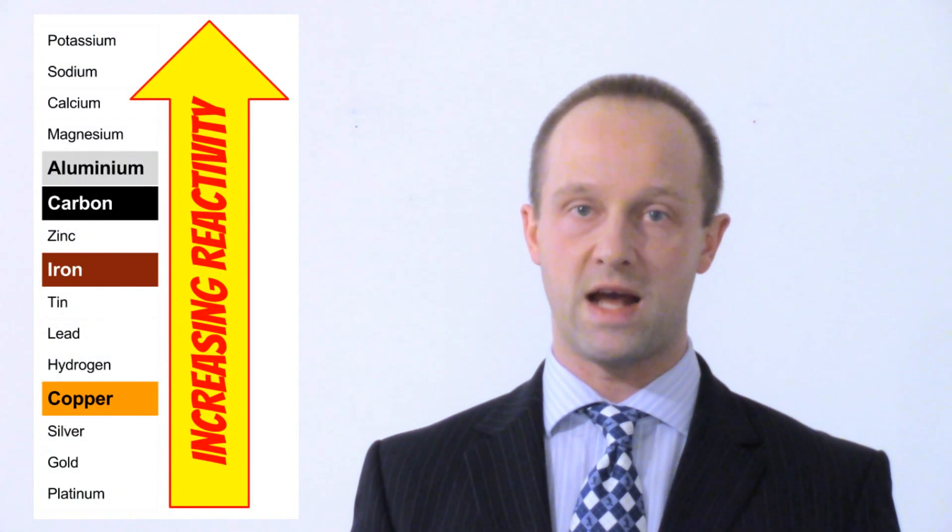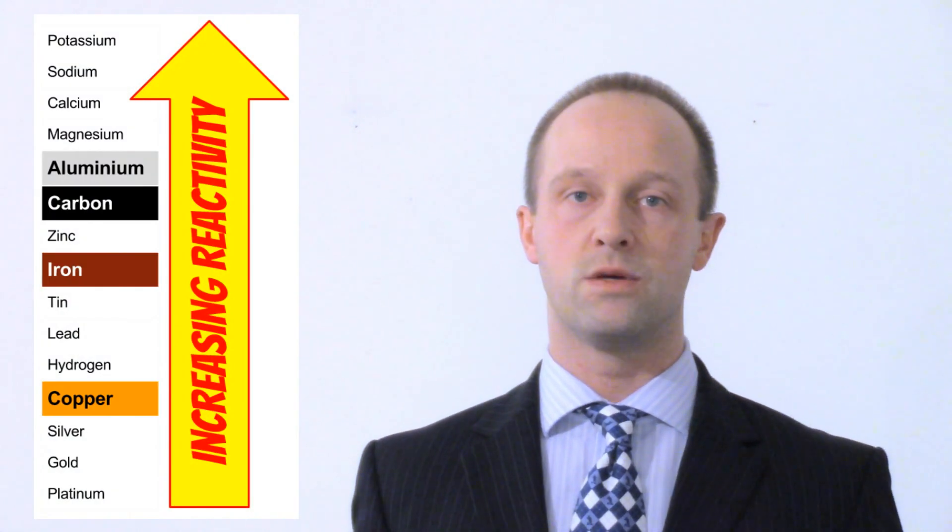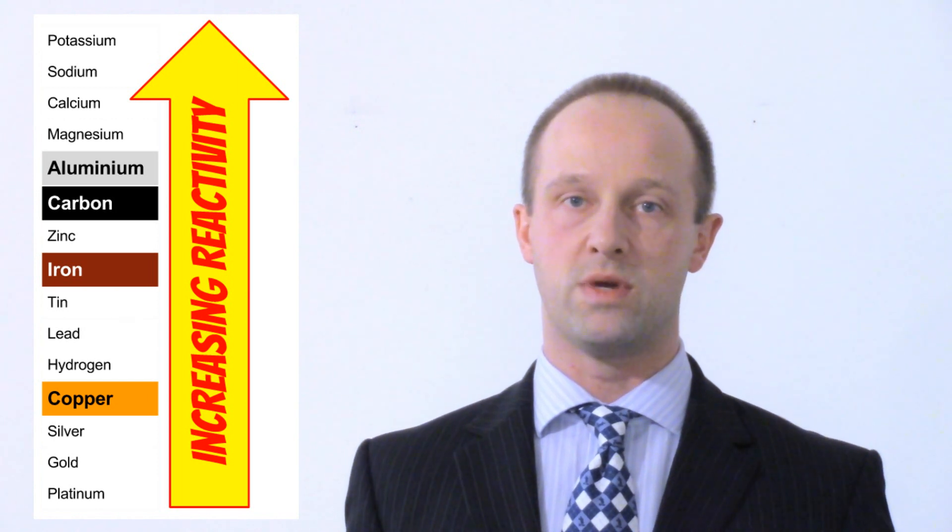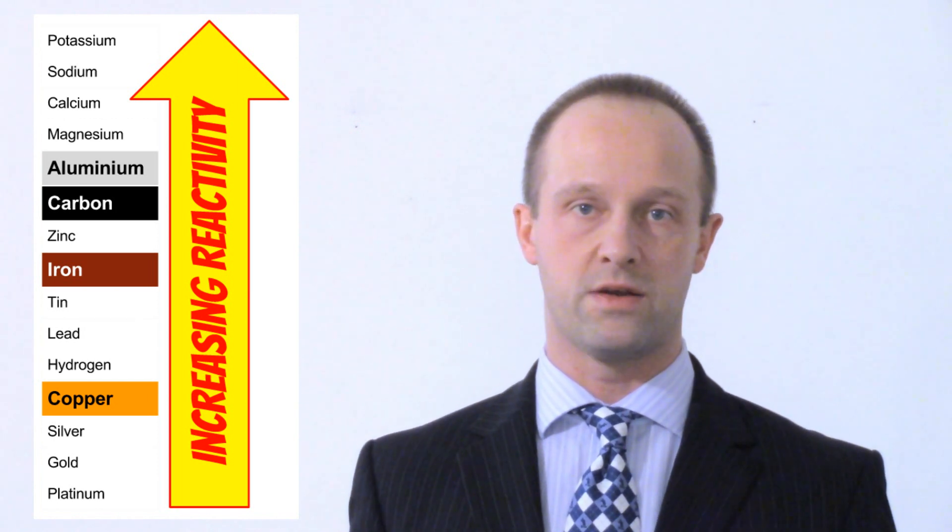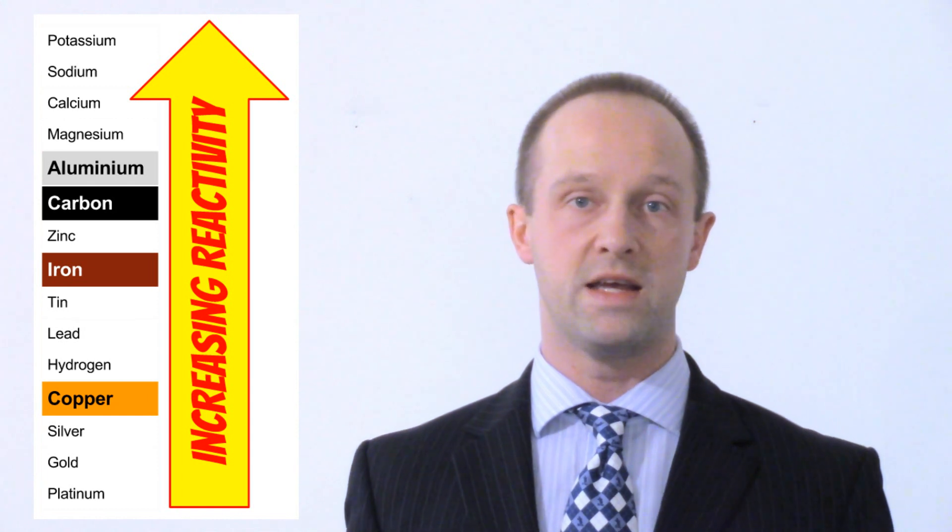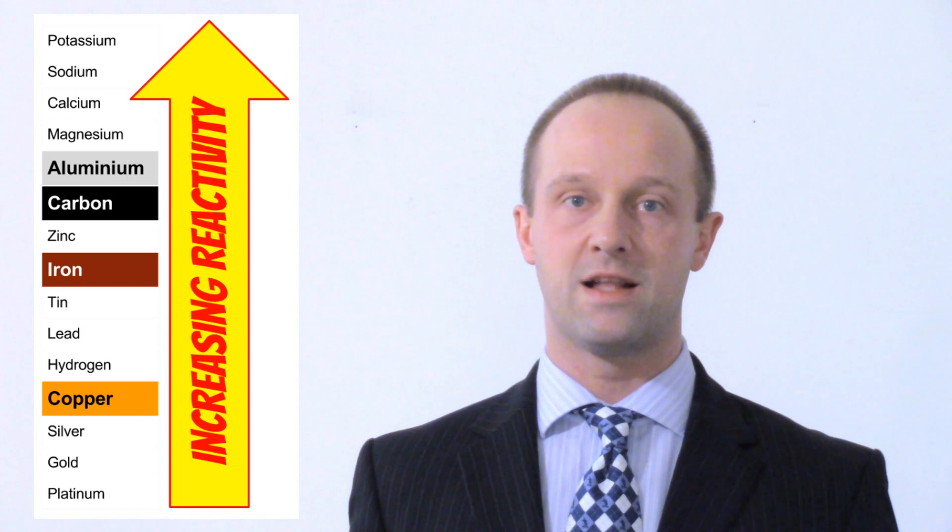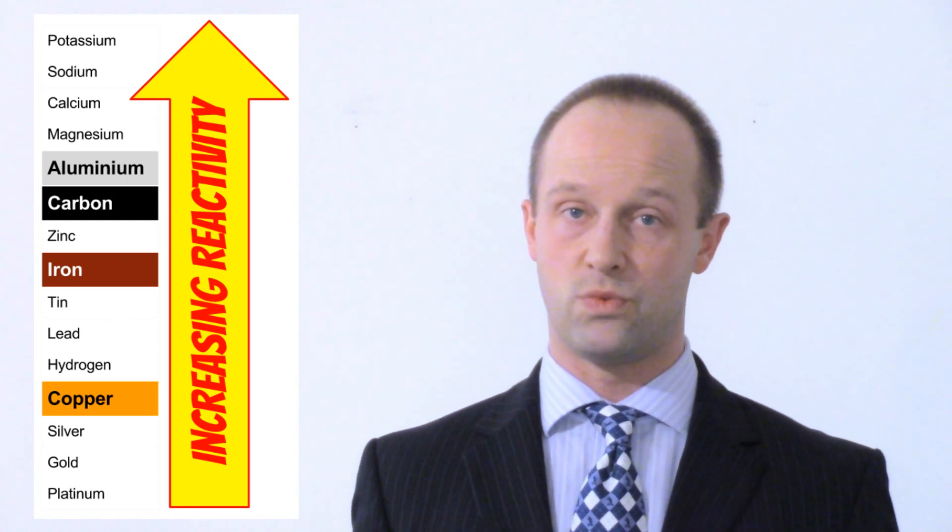The reason it was so expensive is because there wasn't an easy way to extract it at the time. It's fairly common in the Earth's crust, but it's more reactive than carbon, which means that we can't extract it from aluminium oxide in the same way that we can extract iron from iron oxide or copper from copper oxide by heating them with carbon. With iron and copper, because they're less reactive than carbon when you heat their oxides with carbon, you form carbon dioxide as the carbon steals the oxygen and you're left with the pure metal.